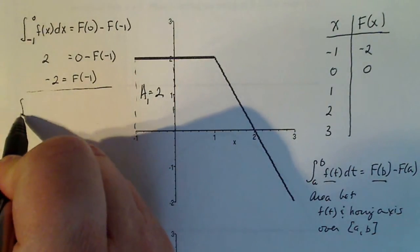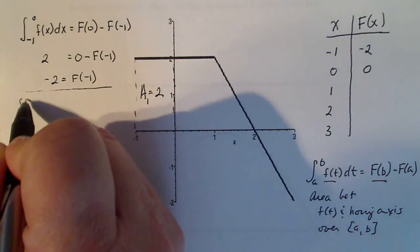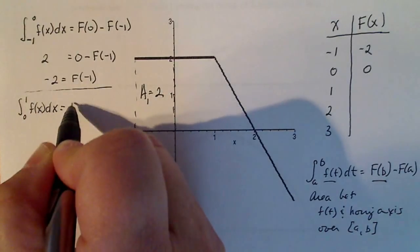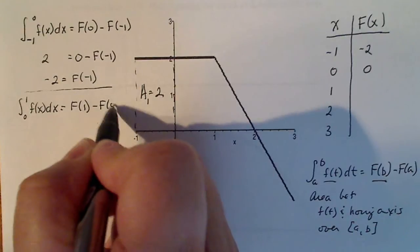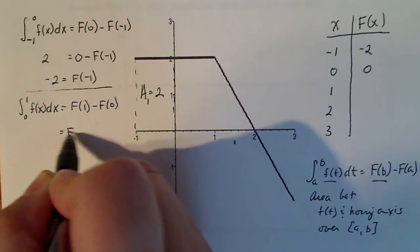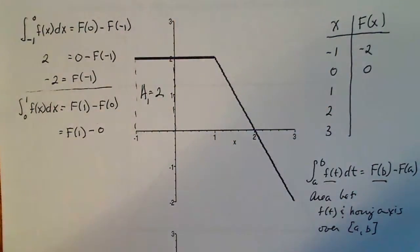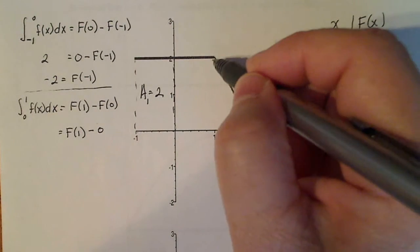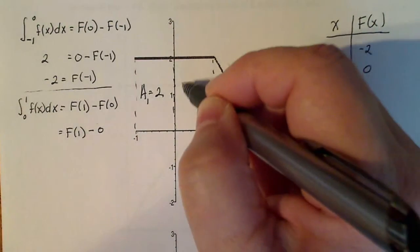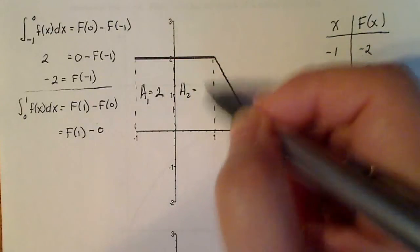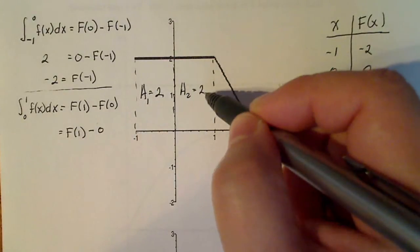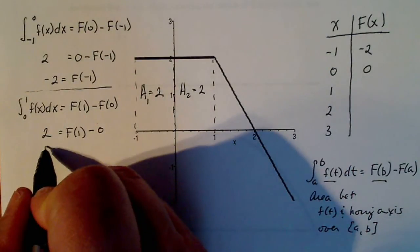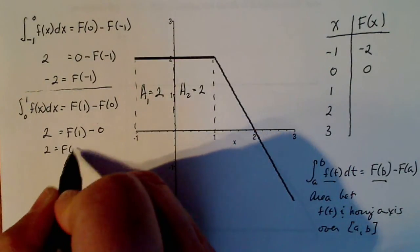So the next interval I'm going to work on is zero to one, f of x dx. That's equal to f of one minus f of zero. F of one is the unknown. F of zero was given. I just have to find the area from zero to one. So that's this part, area sub two. And that's exact same shape as that. So that's also two. So it looks like straightforward f of one is two.